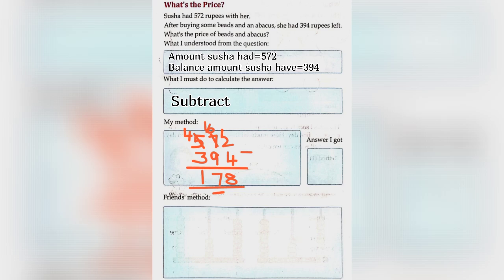What's the price? Susha had 572 rupees with her. After buying some beets and an abacus, she had 394 rupees left. What's the price of beets and abacus? What I understood from the question. Amount Susha had is equal to 572. Balance amount Susha have is equal to 394. What I must do to calculate the answer. So, here we have to subtract. My method. 572 minus 394 is equal to 178. Answer I got will be 178.